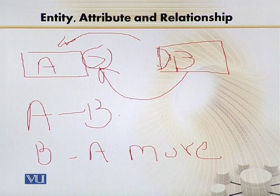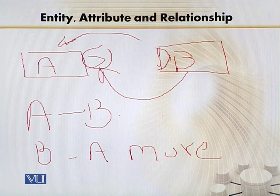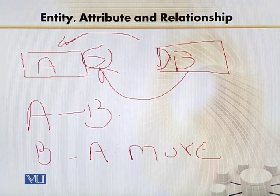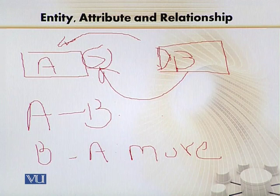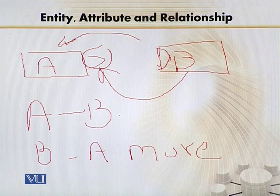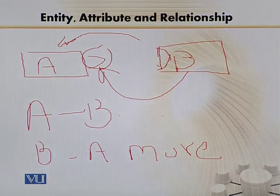Cardinality ya to one hogi ya more hogi. 'More' represent hota hai symbol se jo draw kiya hua hai, aur 'one' ko represent karne ka koi tarika nahi hai — agar kuch nahi likha hua to it is assumed it is understood that the cardinality is one. So that is all which I want to discuss about cardinality. This actually sums up the two concepts of optionality and cardinality, and this is basically relationship — relationship ke andar yeh do hi concepts hain. Now it's a game of practice — the more you exercise, the more you do practice, utna easy aapko yeh cheezein samajh aayengi.